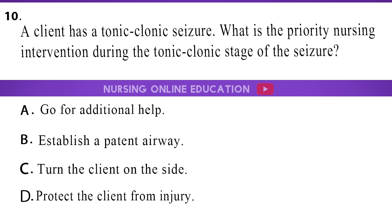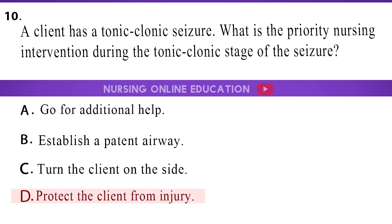Question 10: A client has a tonic-clonic seizure. What is the priority nursing intervention during the tonic-clonic stage of the seizure? A. Go for additional help. B. Establish a patent airway. C. Turn the client on the side. D. Protect the client from injury. The answer is option D: Protect the client from injury.